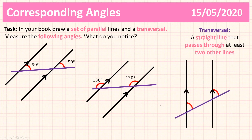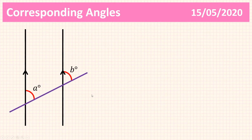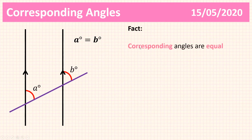What if I had a diagram like this and I labeled the angles A and B? What would you notice? Pause the video and have another go — maybe draw some more and check if your theory is correct. So let's have a look at what you should have noticed: in my diagram, A and B are equal, similar to my previous diagrams where I had 50 degrees and 50 degrees, and 130 degrees and 130 degrees. And that's because of the following angle fact: corresponding angles are equal.